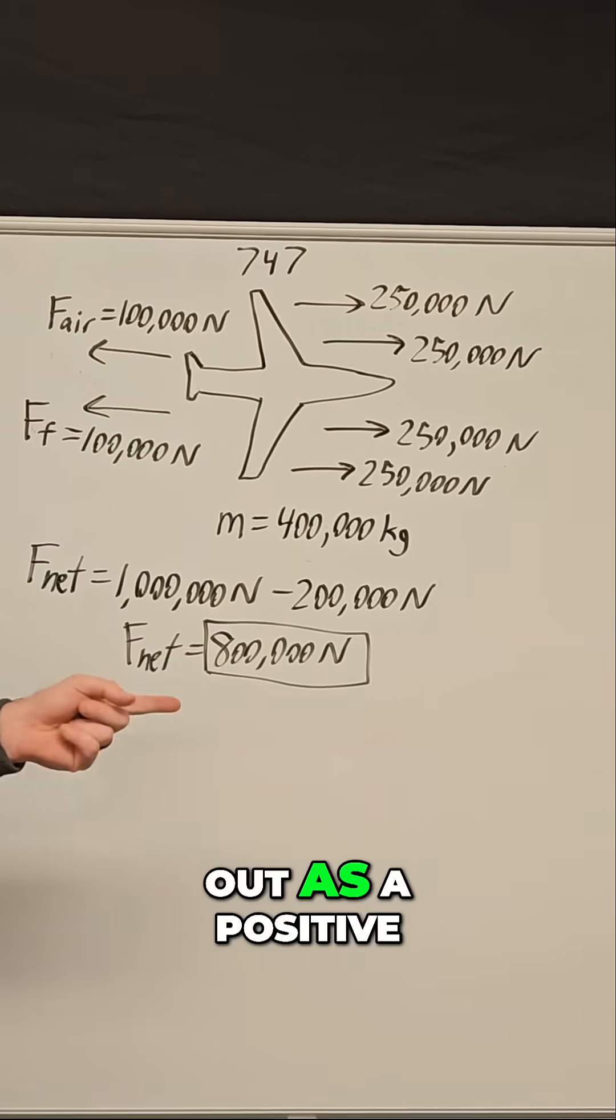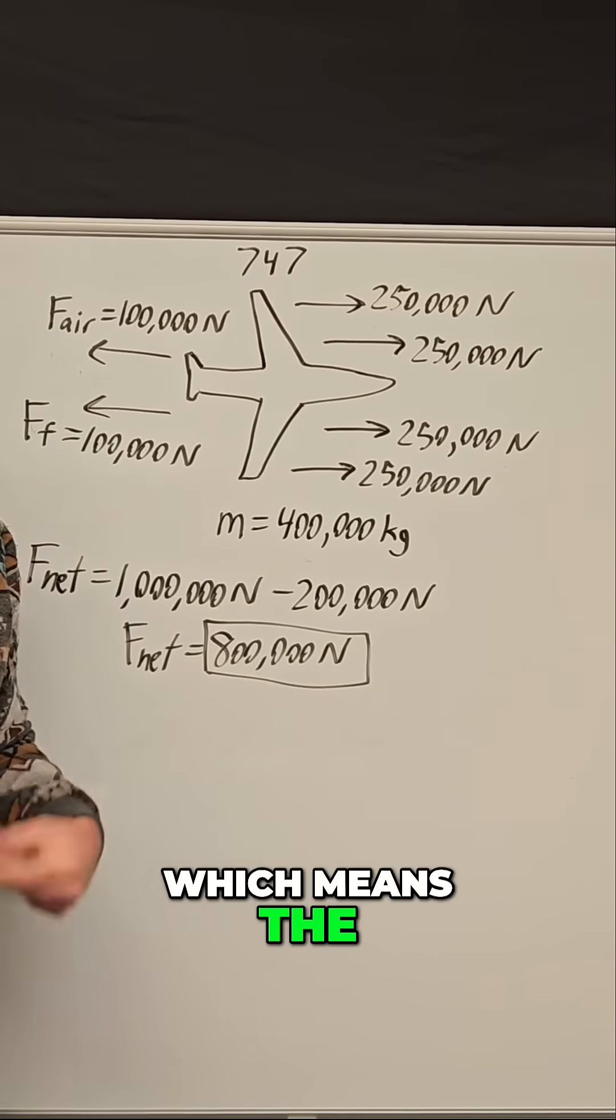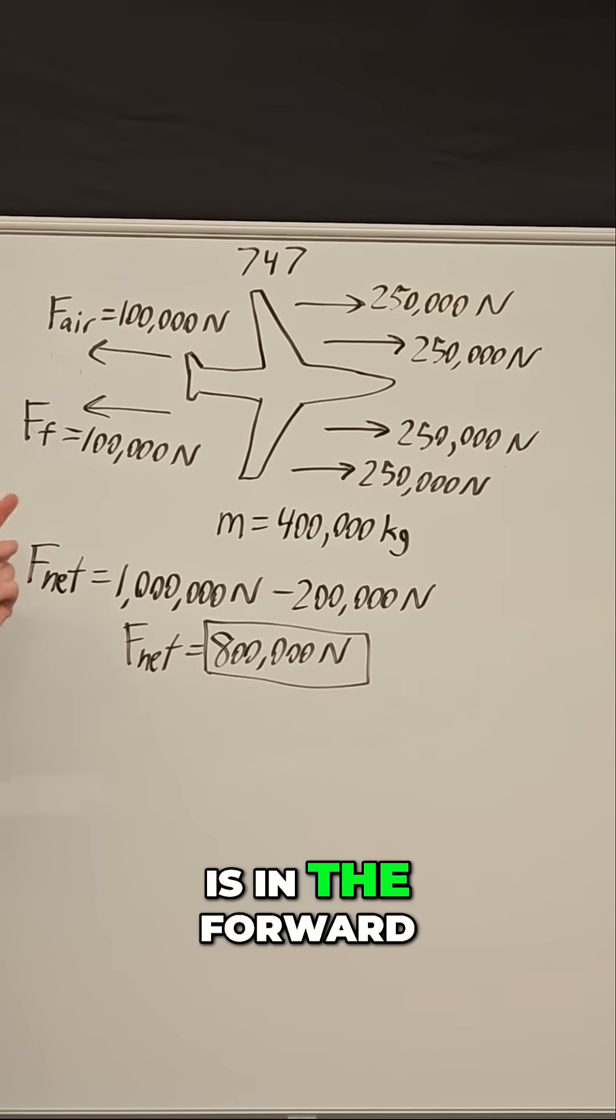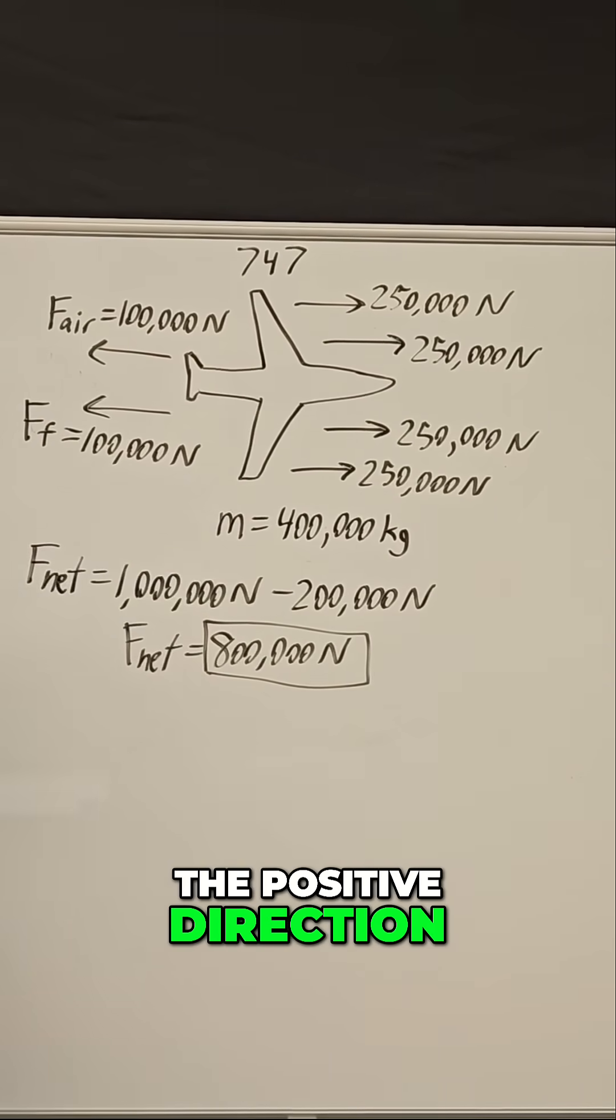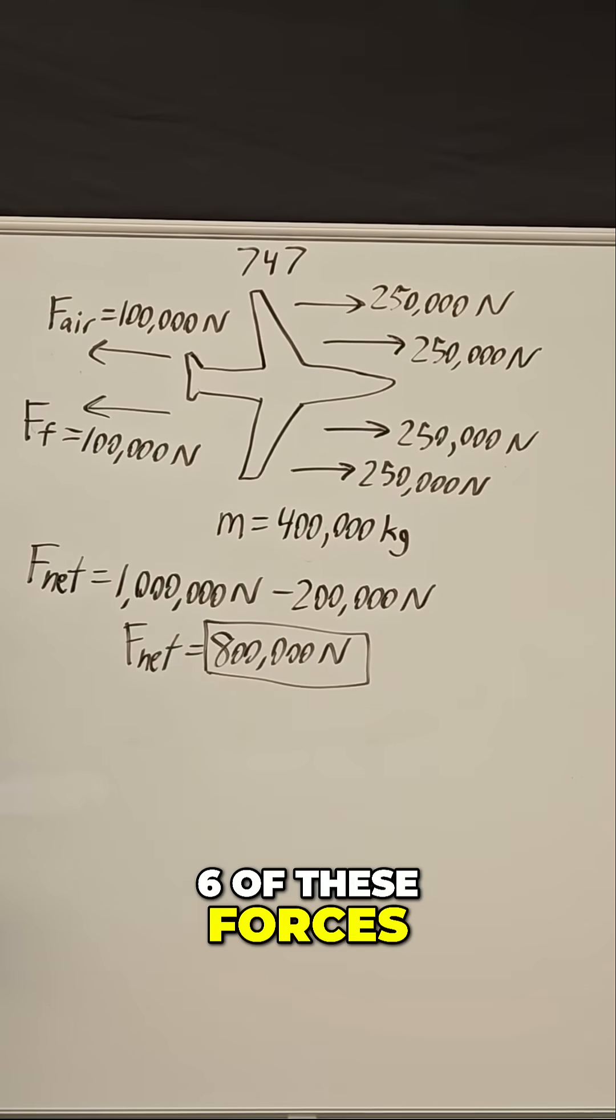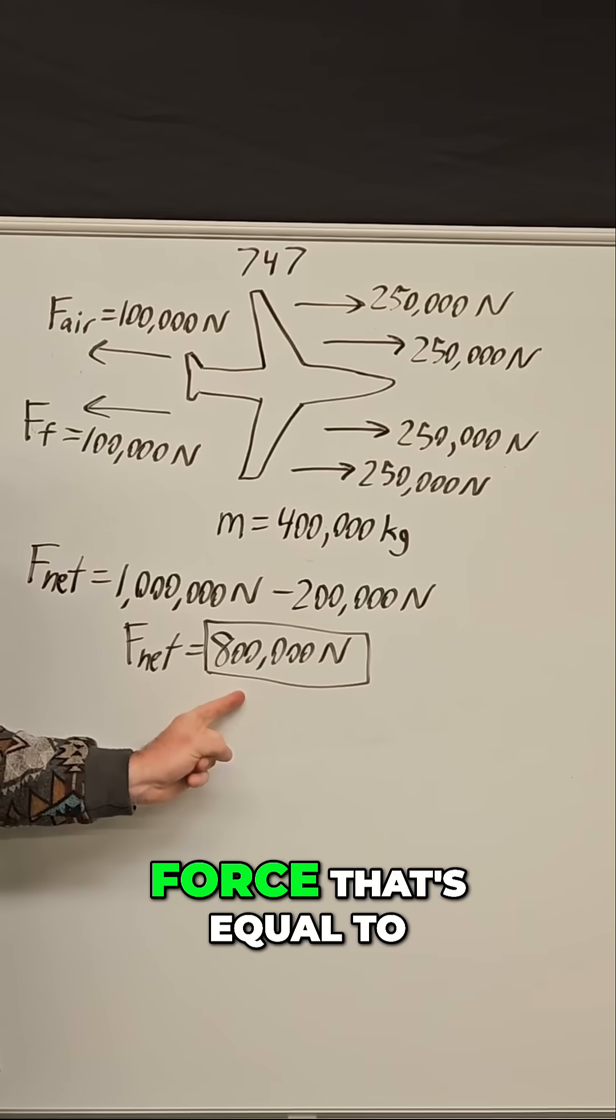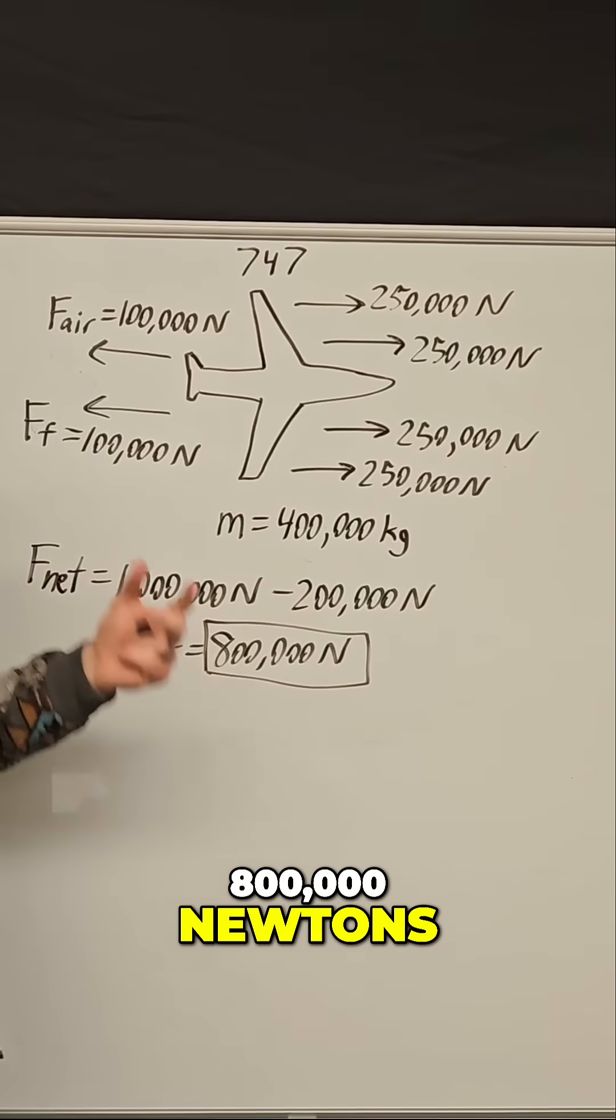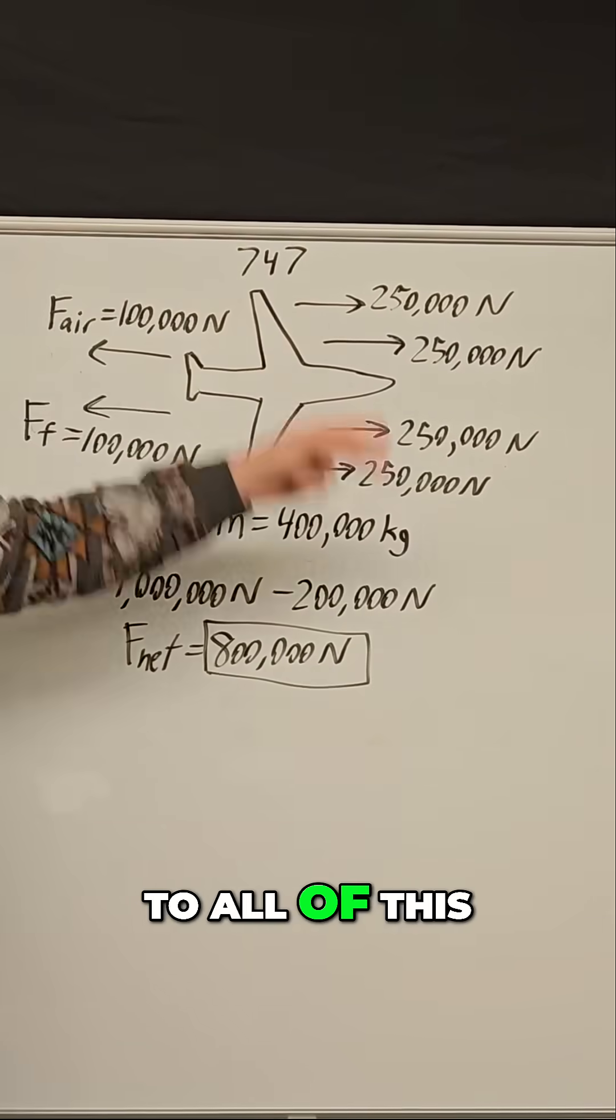Our net force came out positive, which means the overall net force is in the forward direction. What that means is all six of these forces could be replaced with a single force equal to 800,000 newtons, and that is equivalent to all of this.